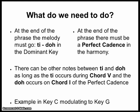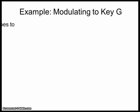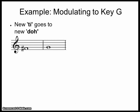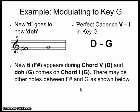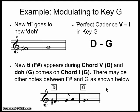For example, the key of C modulating to the key of G. The new Ti goes to the new Do, so F sharp is the new Ti going to G. Underneath it, we'll have a perfect cadence V to I in the key of G. These chords will be D major to G major. The new Ti, F sharp, appears during chord V, which is the chord of D, and the Do, G, comes on chord I, which is the chord of G. There may be other notes between the F sharp and the G, as shown here.